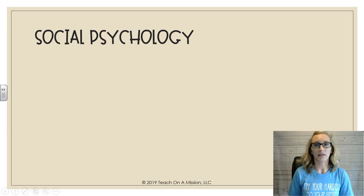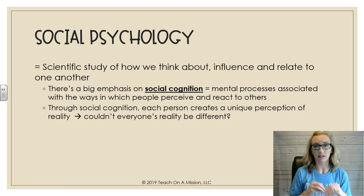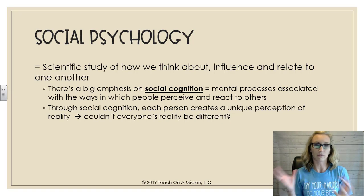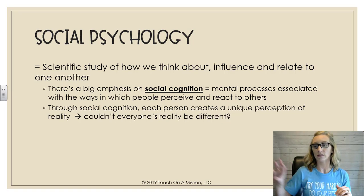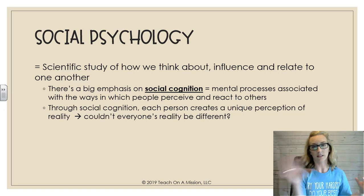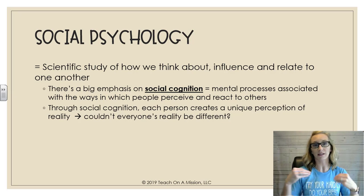So first let's talk about the big picture: social psychology and what is that? It's the scientific study of how we think about, influence, and relate to one another. It is very similar to sociology, but still very different. Sociology looks at groups of people and trends and statistics, whereas social psychology is still very much about the individual and how they are impacted in the social setting.